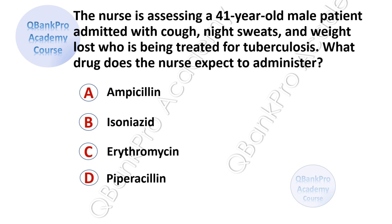Here's the first question. And if you haven't seen my recent video, Cardiodrugs, on five important cardiovascular medications that often appear on the examination, make sure you watch it right after this video. The nurse is assessing a 41-year-old male patient admitted with cough, night sweats, and weight loss who is being treated for tuberculosis. What drug does the nurse expect to administer? A, ampicillin; B, isoniazid; C, erythromycin; D, piperacillin.